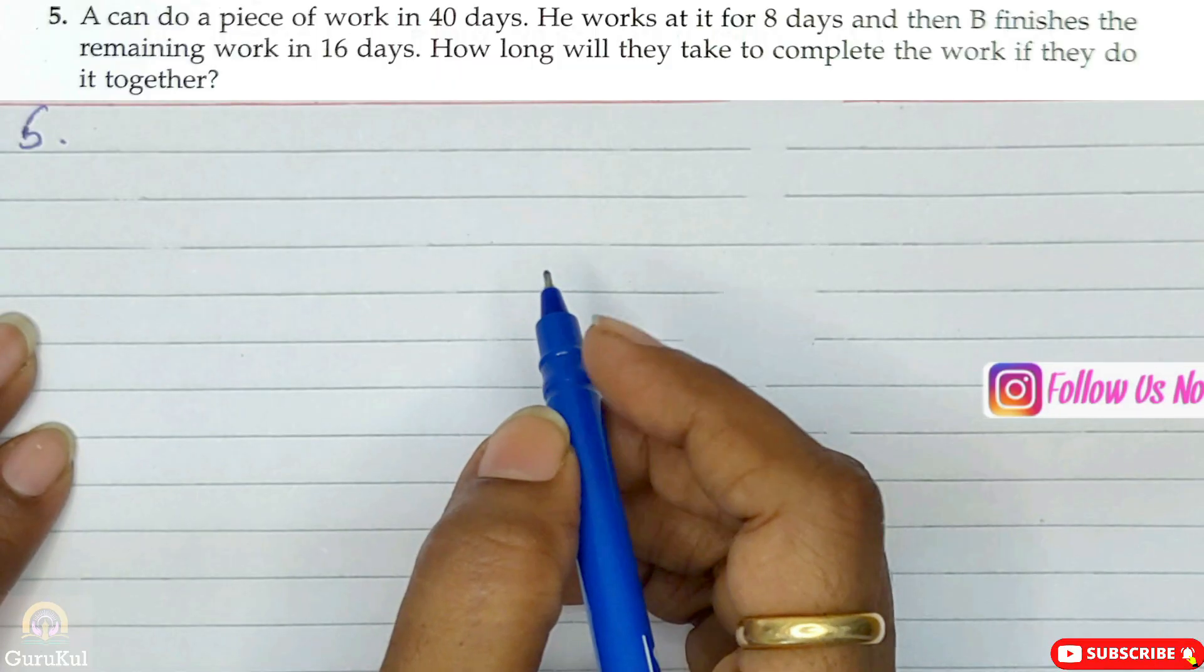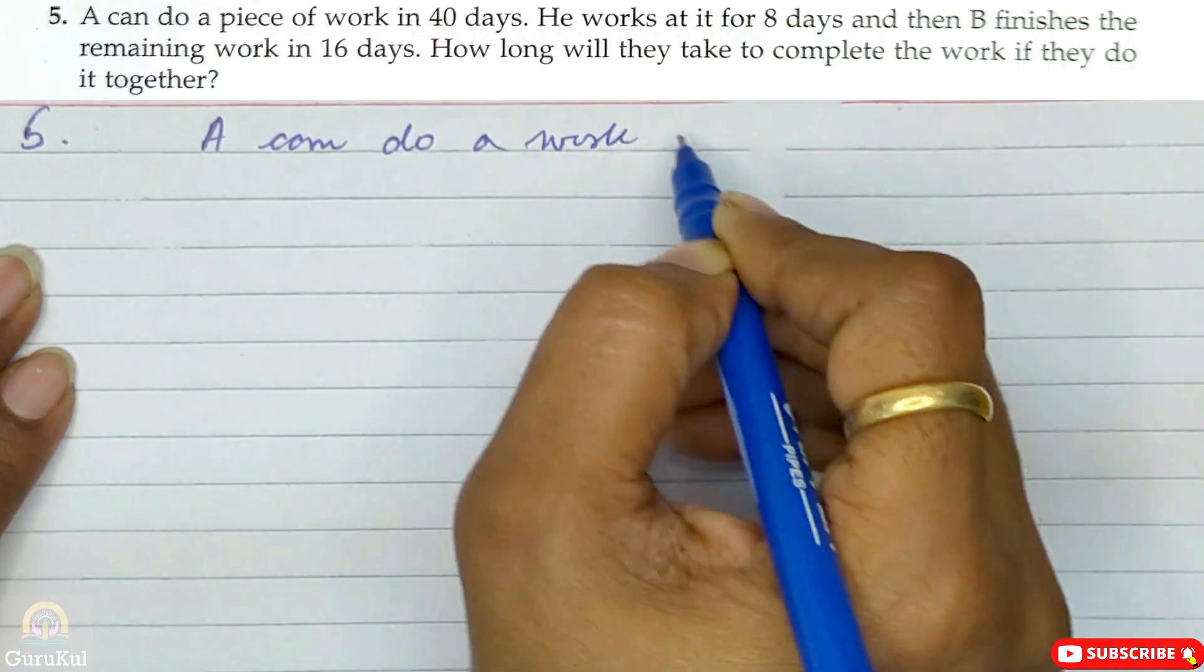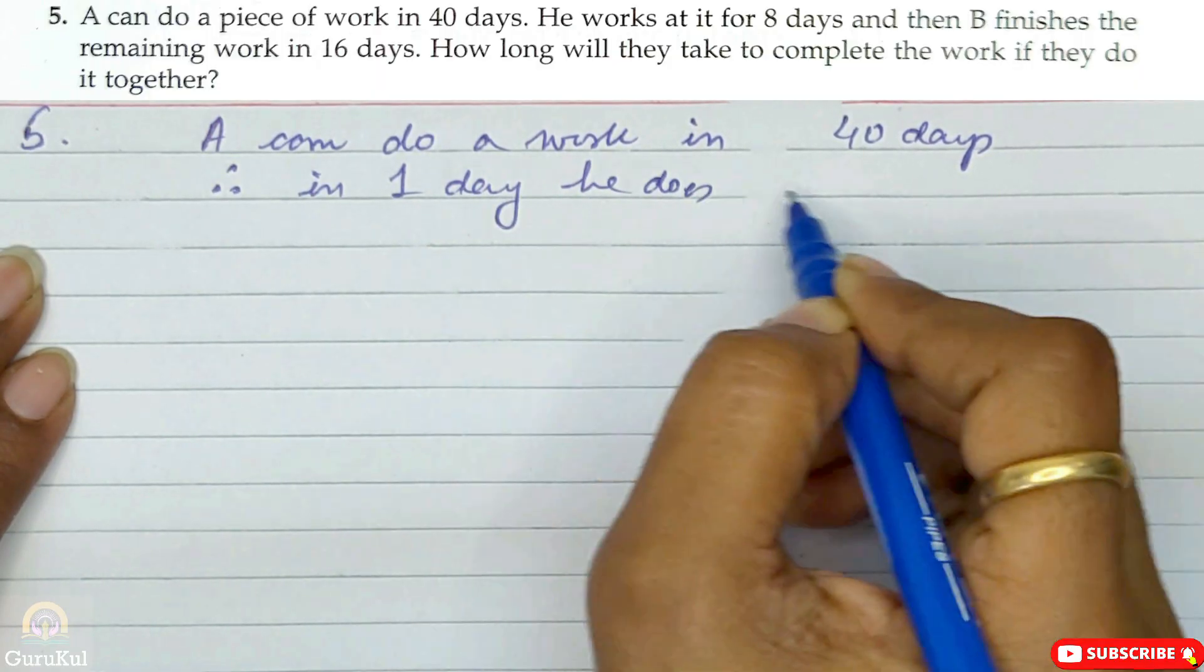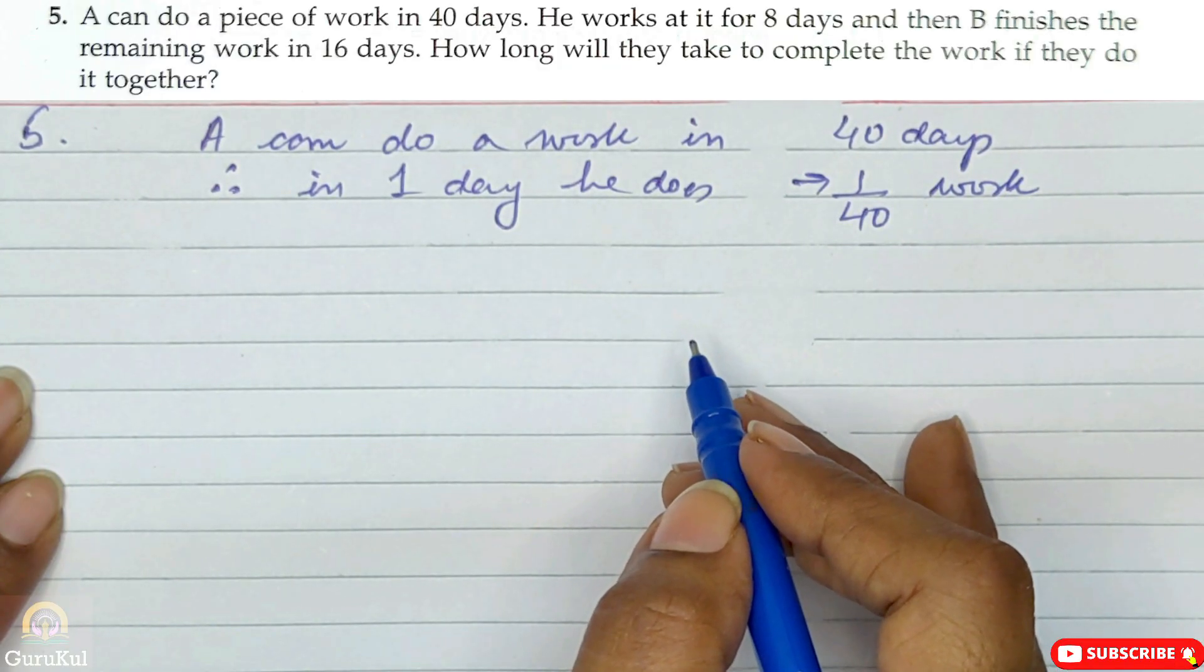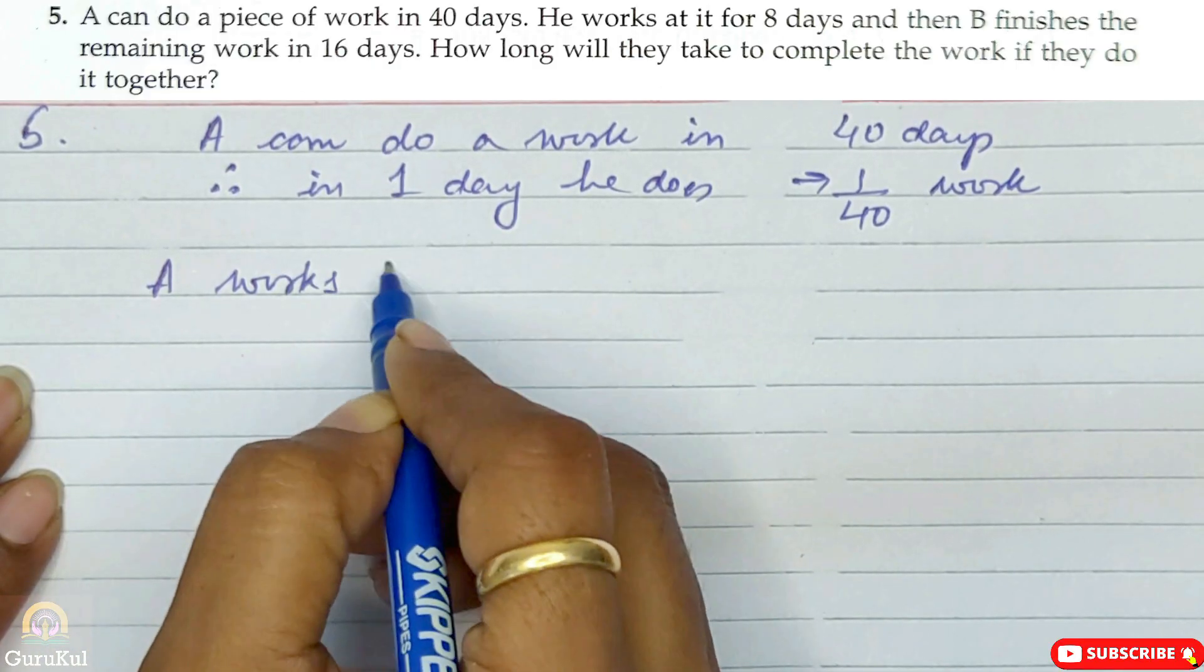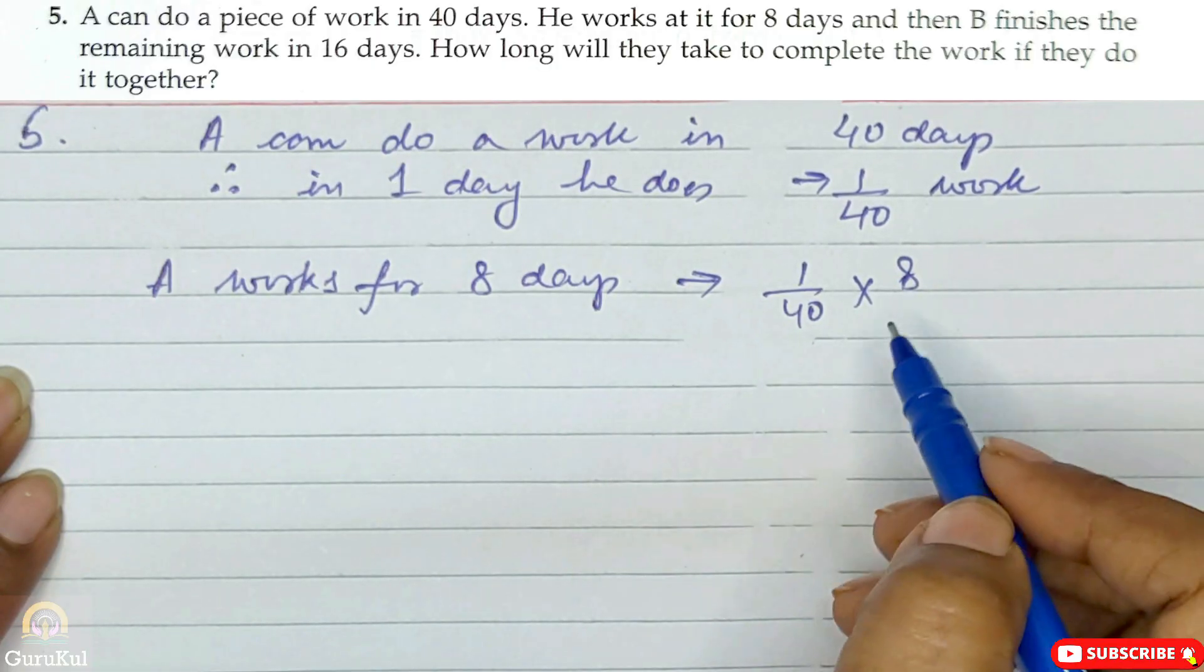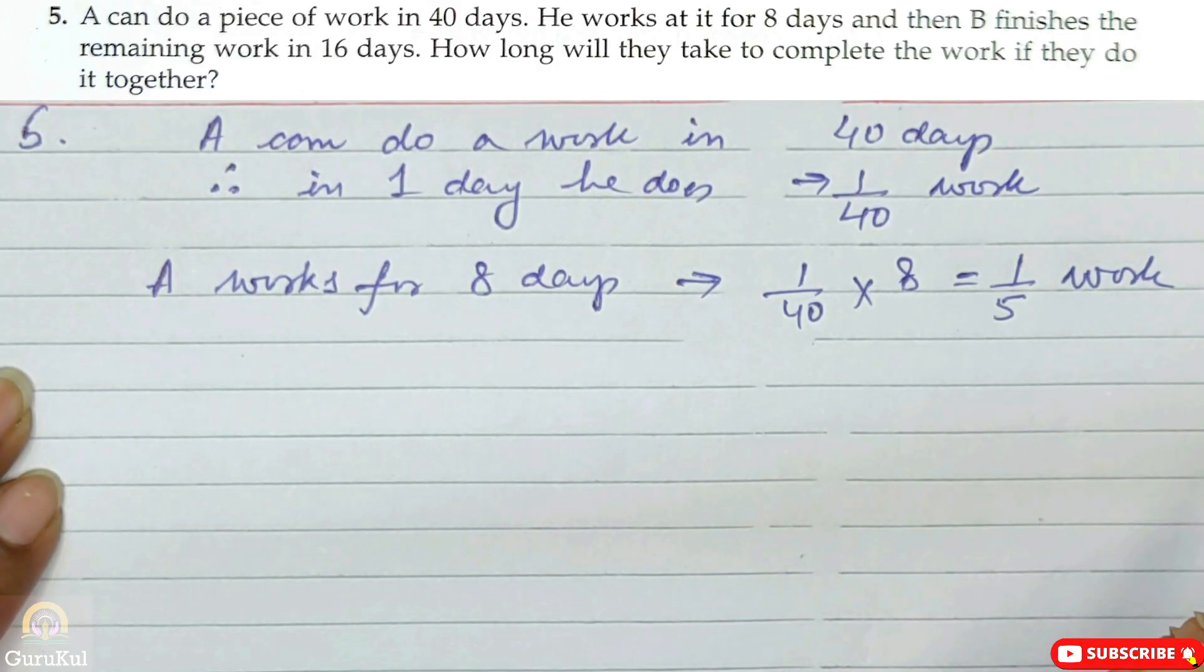A can do a piece of work in 40 days. He works at it for 8 days and then B finishes the remaining work in 16 days. How long will they take to complete the work if they do it together? So step by step. Don't panic, things are easy. A can do work in 40 days, therefore in one day he does 1 by 40 work. He works for 8 days, so A works 1 by 40 into 8, which reduces to 1 by 5 work.